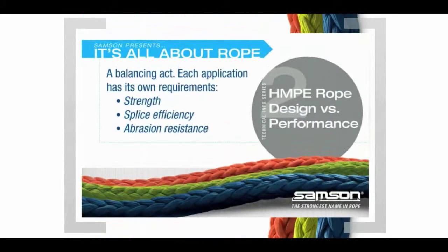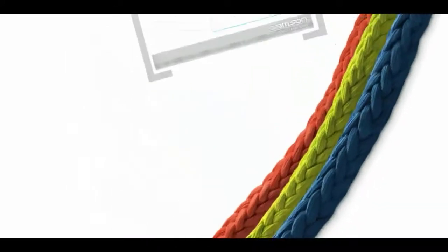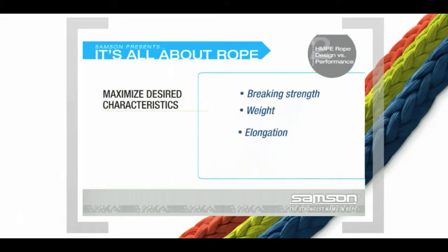Designing a rope is a balancing act. Each application has its own requirements: strength, splice efficiency, abrasion resistance. The design of the rope is critical to its performance. Ultimately, the engineer chooses to maximize those characteristics required by the application while eliminating potential performance problems.